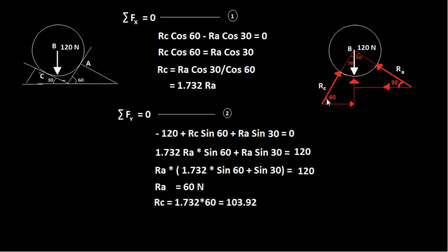To clarify how these angles are found: for the plane at 30 degrees, drawing a perpendicular and completing the right triangle gives 90°, 30°, and therefore 60°. For the plane at 60 degrees, the same process gives 90°, 60°, and therefore 30°. So the angle used for RC is 60° and for RA is 30°.